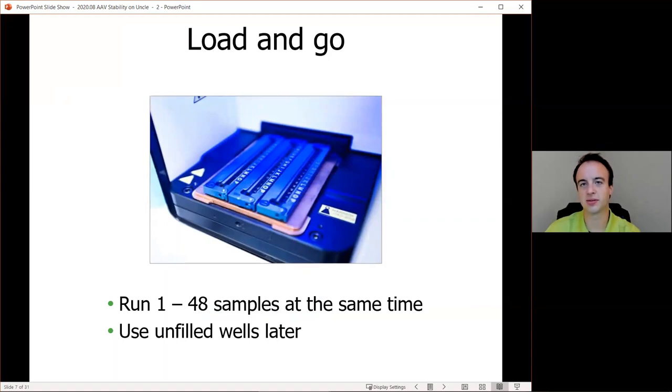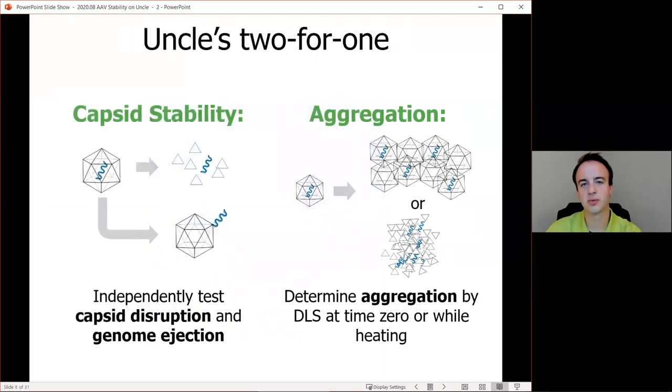Now the UNCLE is ready to test out AAV stability. So let's take a look at what it's going to be used for. So with AAVs on UNCLE, fluorescence can be used to measure two different behaviors for capsid stability, either first shown on the left, proteins unfolding and capsid disruption occurring as a result, or lower shown on the left, genome ejection occurring from capsids. We'll look at data both from the literature and from UNCLE to demonstrate these behaviors. With UNCLE's SLS and DLS capabilities, we will also be able to identify when aggregation occurs, either at time zero before an experiment from DLS, or during a thermal ramp from SLS, or even during a thermal ramp from DLS as well if we design the experiment differently.